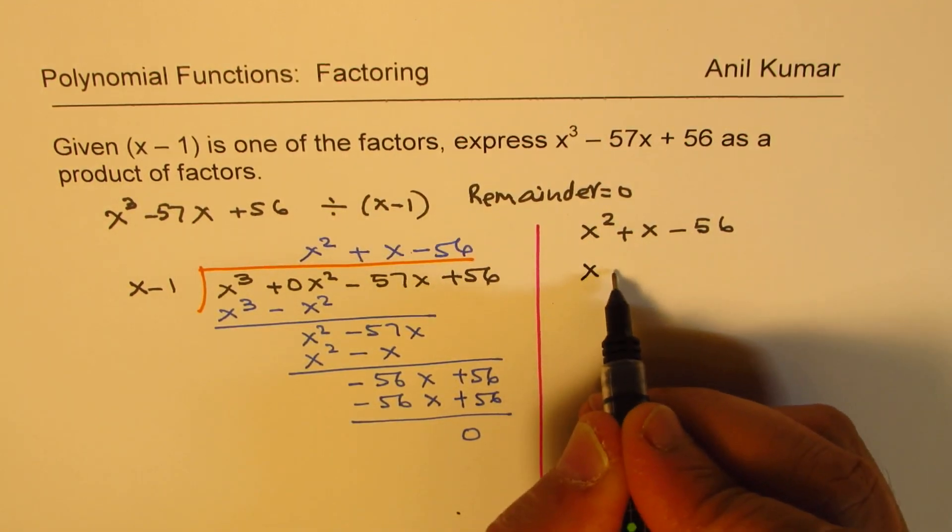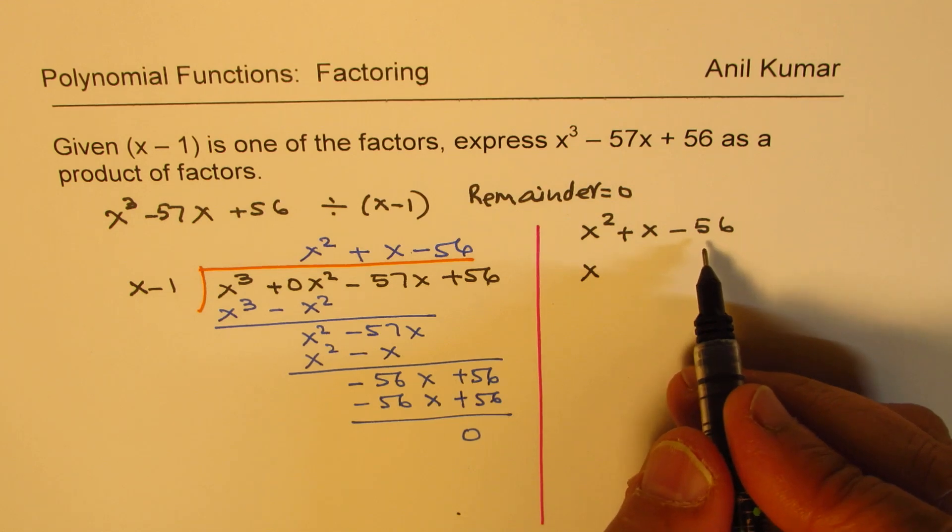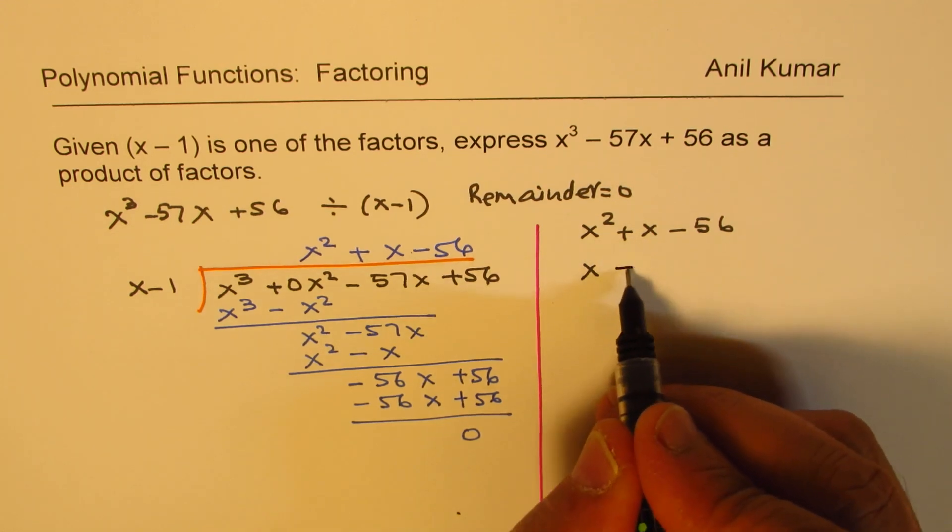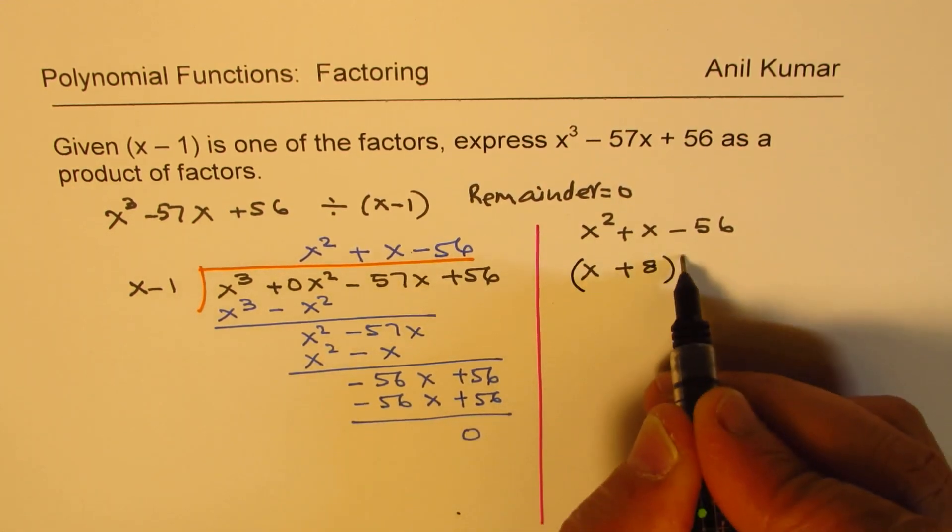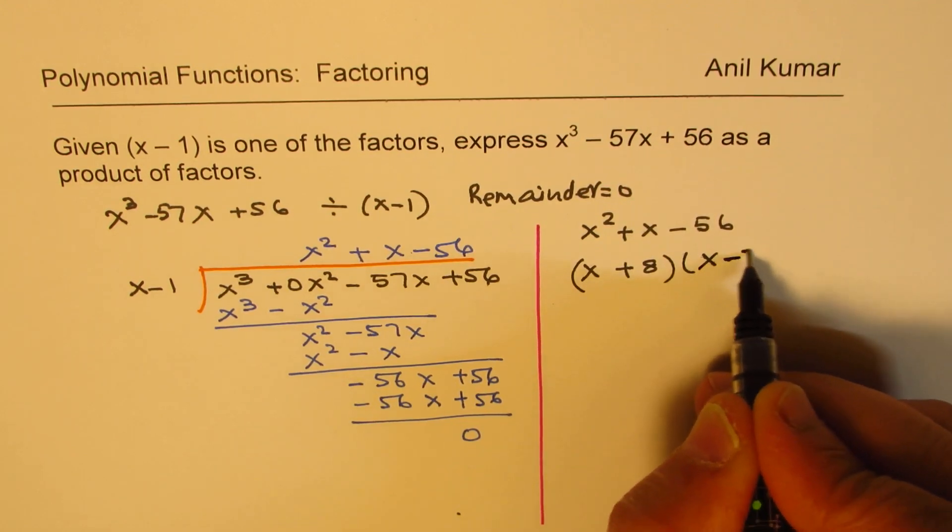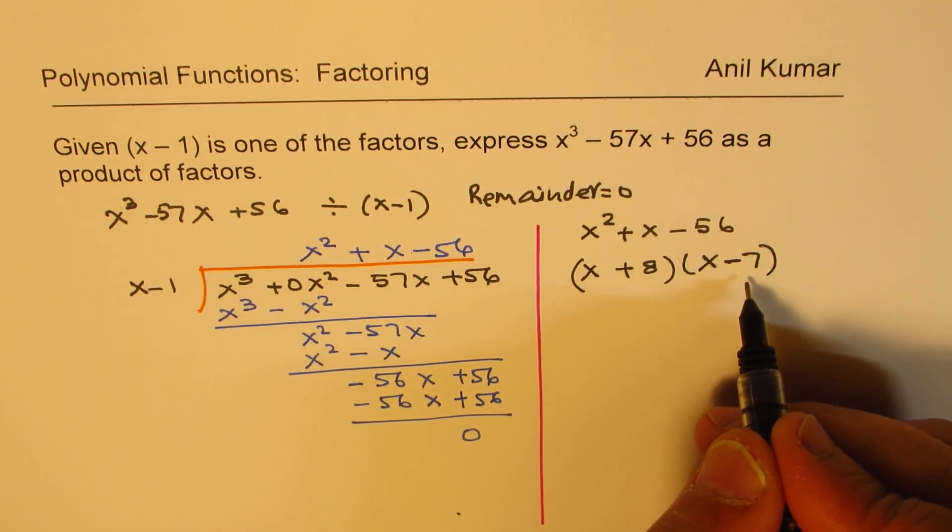We can factor this. 56 is 7 times 8. 8 has to be positive. So x minus 7. So that becomes the other factors.